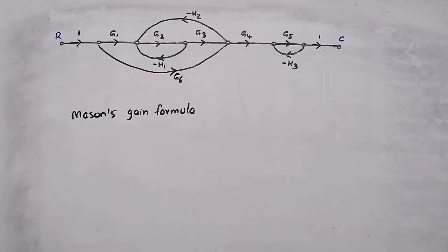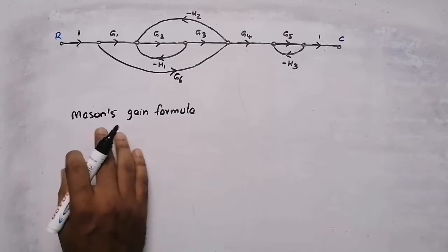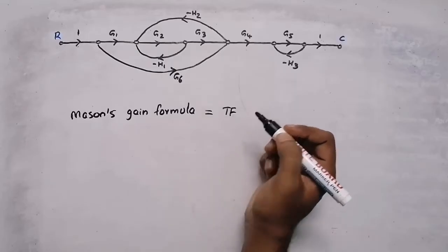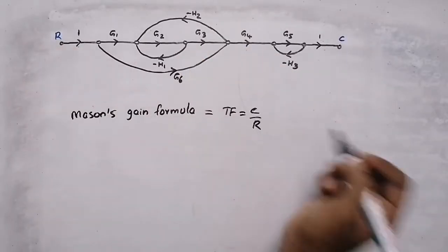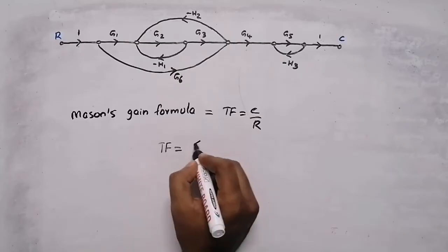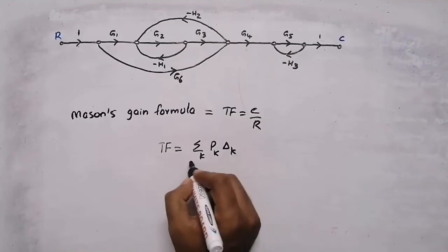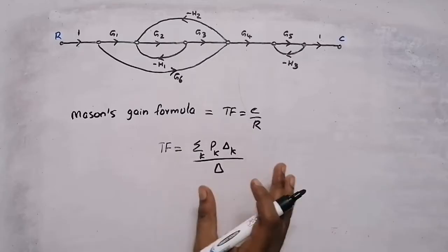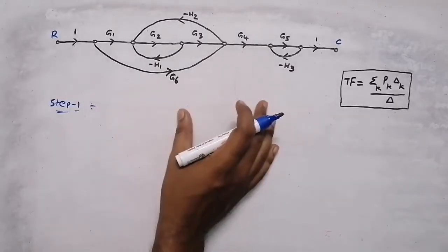In this video we are going to solve a problem using Mason's gain formula. Mason's gain formula is used to find the transfer function of a system — that is, output divided by input. According to Mason's gain formula, the transfer function is the sum of Pk·Δk, all divided by Δ. I will explain each part step by step.